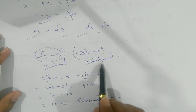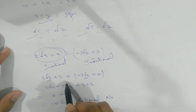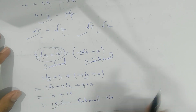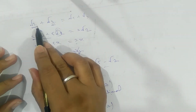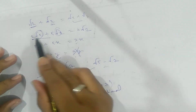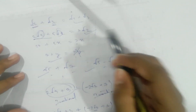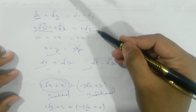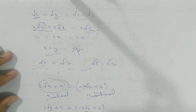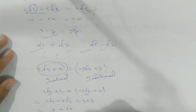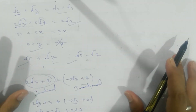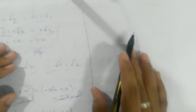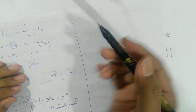So two irrational numbers added together may give you a rational number. In one case you get irrational, and in another case you get rational. So two cases arise here. Now let's look at some rules for multiplication.